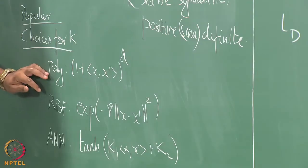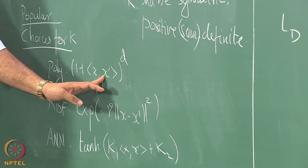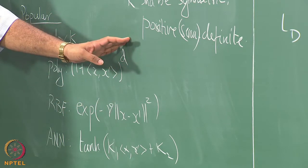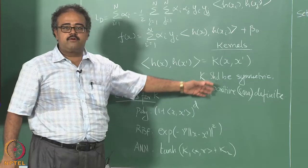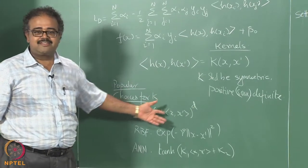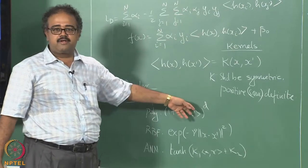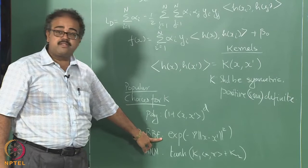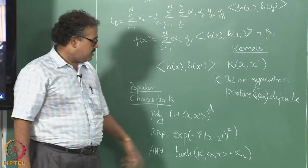There are many choices you can use for the kernel. One is the polynomial kernel, which is essentially 1 plus the inner product of X and X prime, the whole raised to the power d. D is a parameter — you can have d equal to 2, 3, or 4; you can even have d equal to 1, which is essentially whatever we have solved so far. The next one is something called the Gaussian kernel or the RBF kernel.